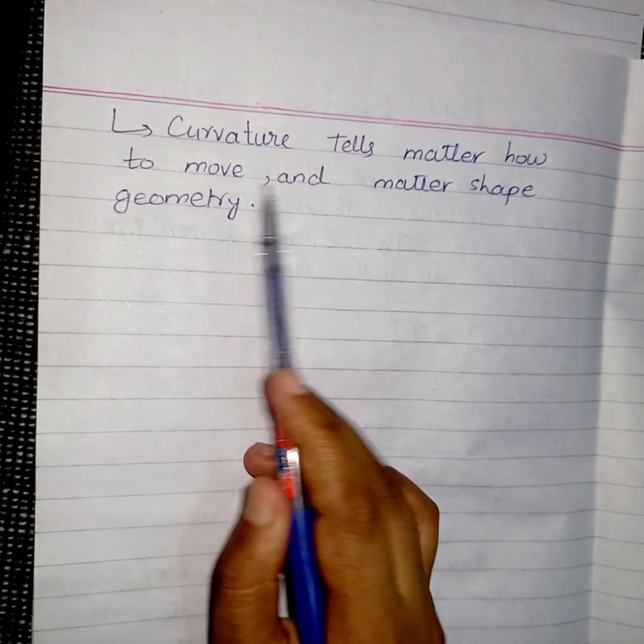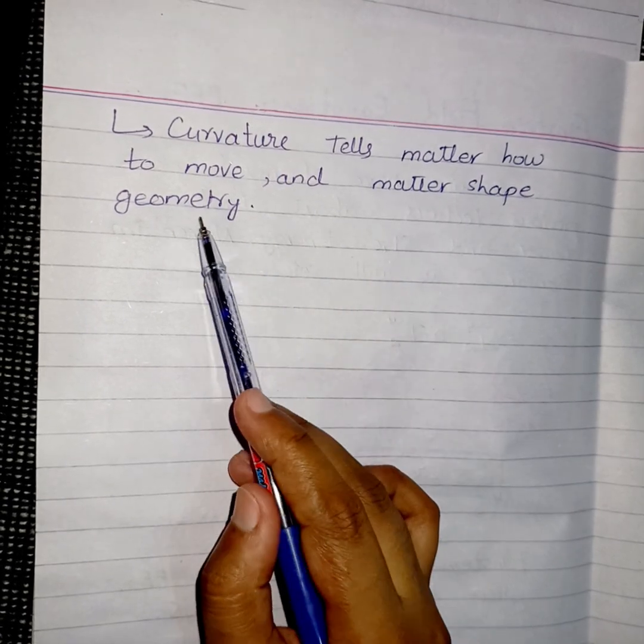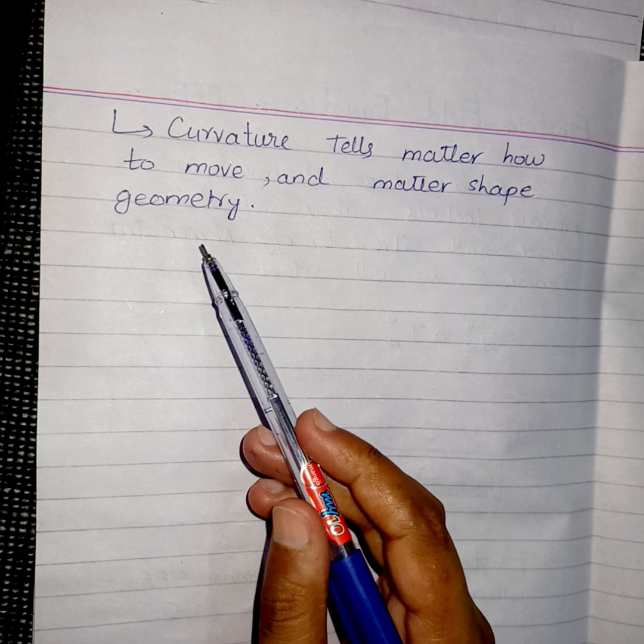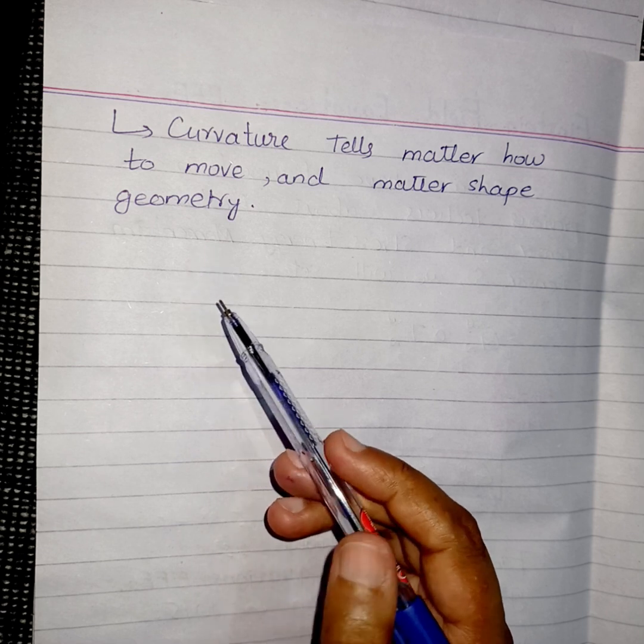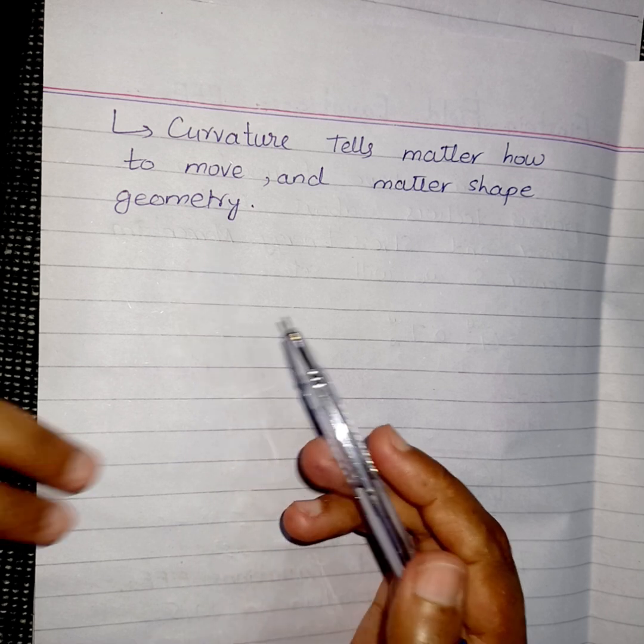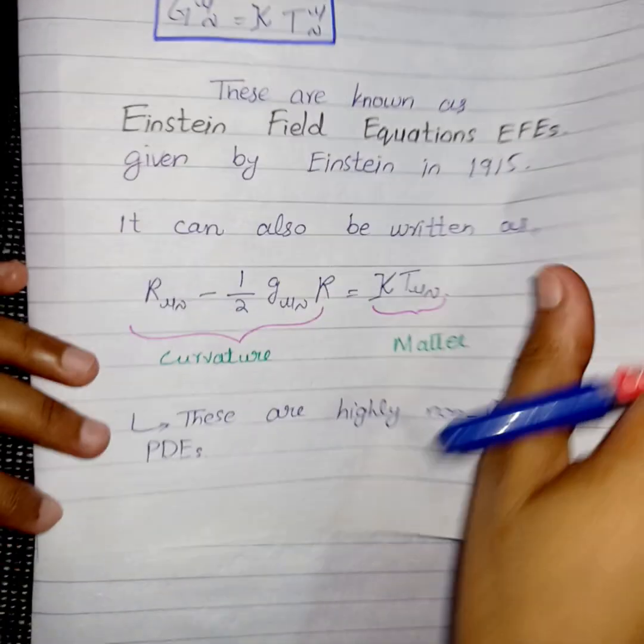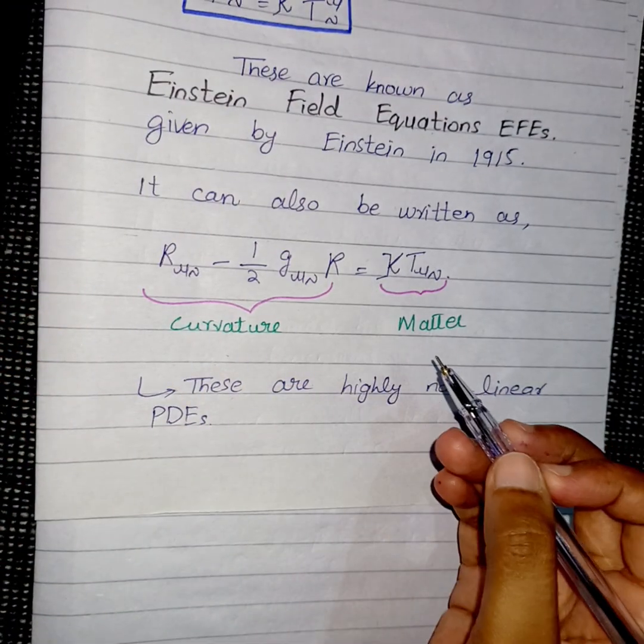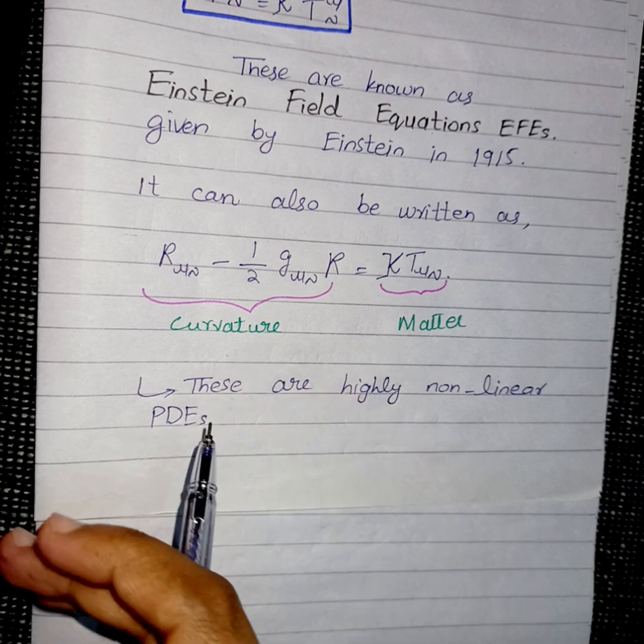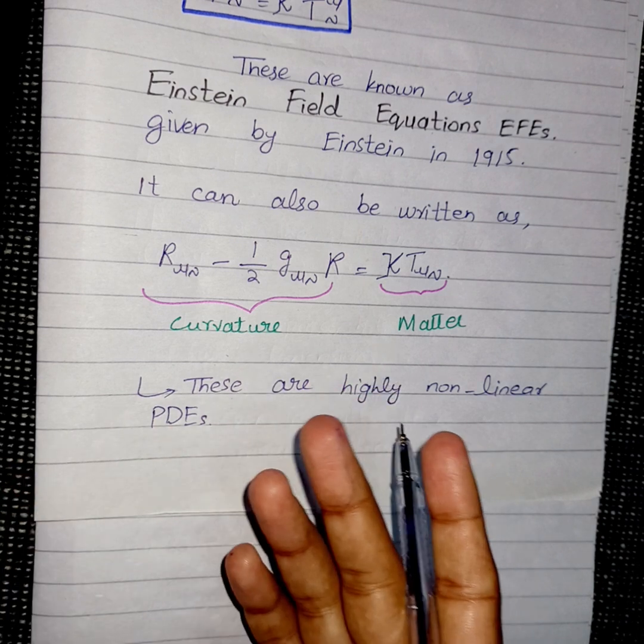Curvature tells matter how to move and matter shapes geometry. The Einstein field equations are actually the combination of curvature and matter. This curvature tells matter how to move and matter shapes the geometry that we are moving along.